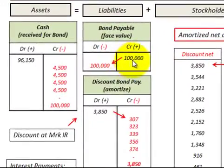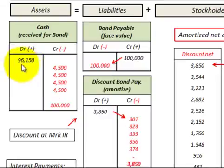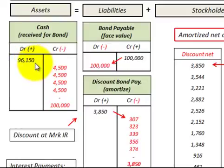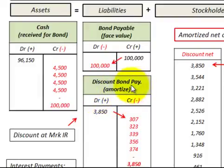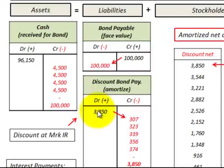We issued a bond with $100,000 face value at a stated rate of interest of 9%, so we credit bonds payable for that amount. Over here in our cash account we received only $96,150 for that bond when we issued it, so we debit cash for that amount. This $96,150 is based on discounting that bond's maturity value back at a market rate of interest of 10%. We need a balancing entry, so we set up a discount to bonds payable — a contra account — and debit it for the difference of $3,850. The debit of $3,850 plus the debit to cash of $96,150 balances with the credit to bonds payable of $100,000.